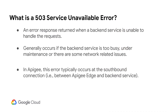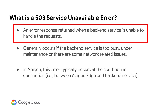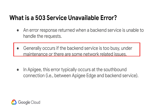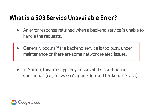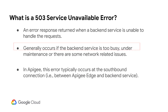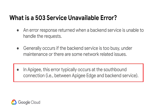So, what is 503 Service Unavailable Error? A 503 Service Unavailable Error means the back-end service is unable to handle the client request. This generally occurs either if the back-end service is too busy to handle the request, down as part of a scheduled maintenance, or there are some network-related issues between APG and the back-end service. In APG Edge, this error can be seen typically at the outgoing or southbound connection, that is, during the communication between APG Edge's message processor and the back-end service.